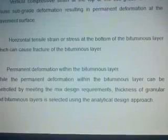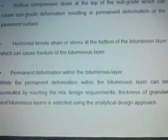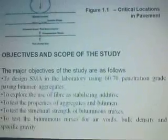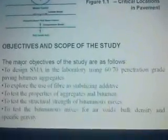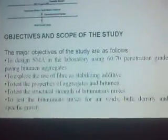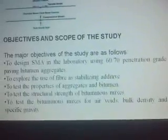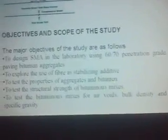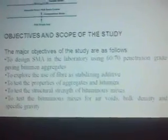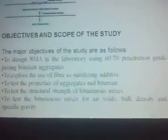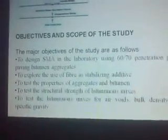Thickness of granular and bituminous layers is selected using the analytical design approach. The major objectives of the study are as follows: to design SMA in the laboratory using 60-70 penetration grade paving bitumen and aggregates; to explore the use of fiber as a stabilizing additive; to test the structural strength of the bituminous mix; and to test the bituminous mix for air voids, bulk density, and specific gravity.